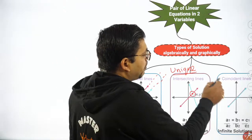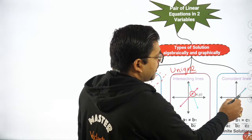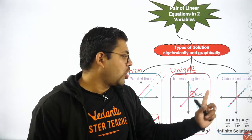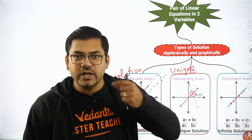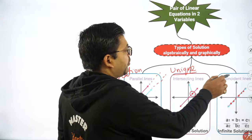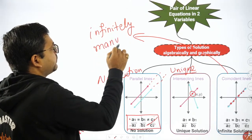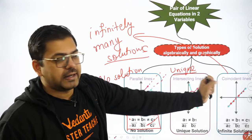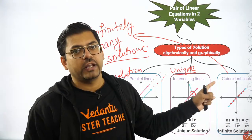For coincident lines, both lines are coinciding — every point is common to both. Don't you feel that there are an infinite number of common points? Since every common point is a solution, those infinite points become our solution. That is why for the third case we write infinitely many solutions. The condition is a1/a2 = b1/b2 = c1/c2 — all ratios are equal.